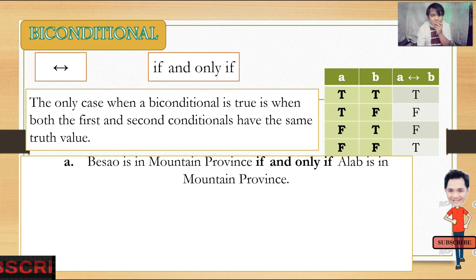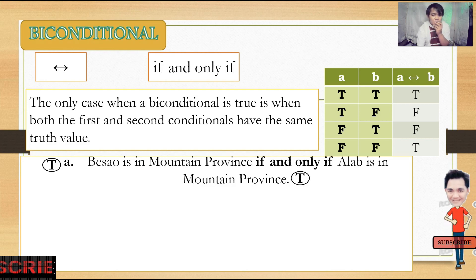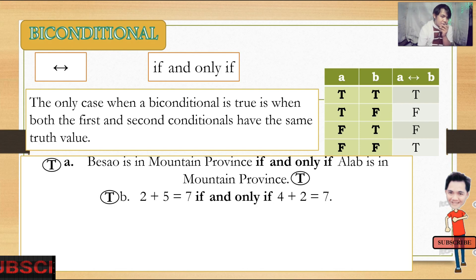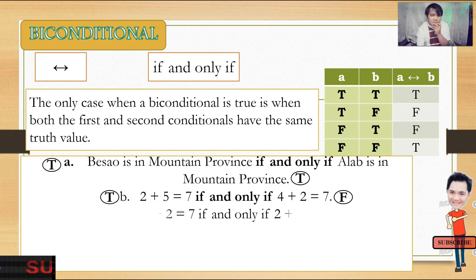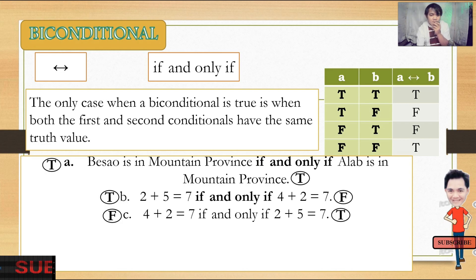Examples: 'Bissau is in mountain province if and only if Alab is in mountain province.' Bissau is in mountain province — true; Alab is in mountain province — true. Result: true. Next: '2 plus 5 is equal to 7 if and only if 4 plus 2 is equal to 7.' The first is true, the second is false — that is a true-false combination, so the result is false.